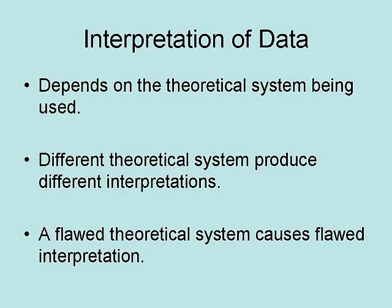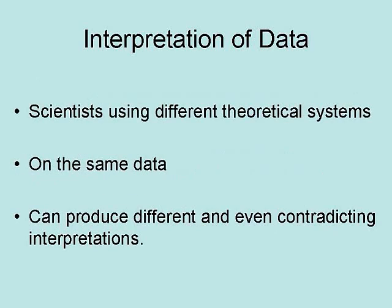The interpretation of data heavily depends upon the theoretical system being used, because different theoretical systems produce different interpretations, and a flawed theoretical system causes flawed interpretations. Scientists using different theoretical systems on the same data can produce different and even contradicting interpretations.